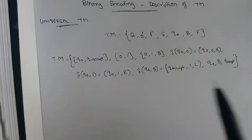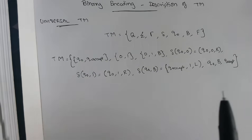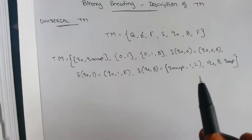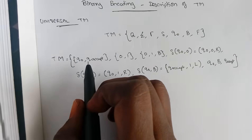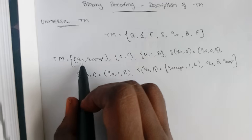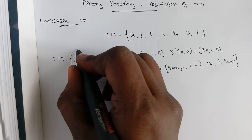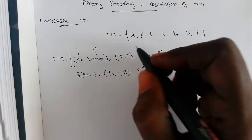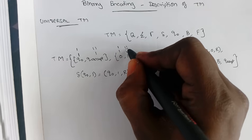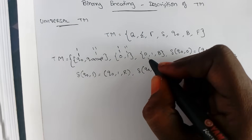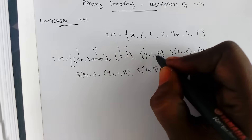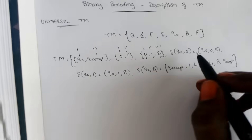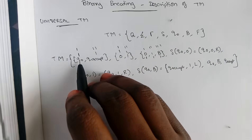Whenever the Turing machine enters into the accepting state on some input, the Universal Turing Machine has to accept it. The description here is very simple: each and every element is represented in terms of a number of ones. For example, when you have states q0 and q_accept, q0 is represented with a single one and q_accept with two ones. Similarly, 0 is represented as a single one, 1 as two ones, and blank as three ones.